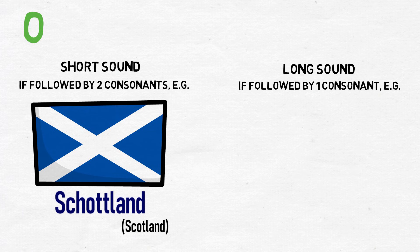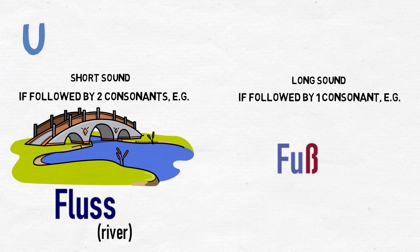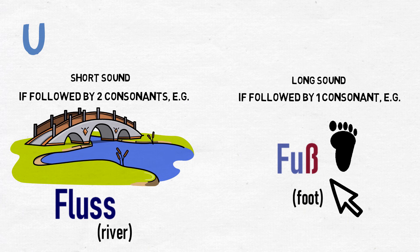The letter U acts in the same way — such as in Fluss, meaning river, and Fuß, meaning foot. Conveniently, this also shows you when to use the ß (Scharfes S) instead of a double S. A ß is used after a long vowel sound, like Straße meaning street, as opposed to Klasse, meaning class.